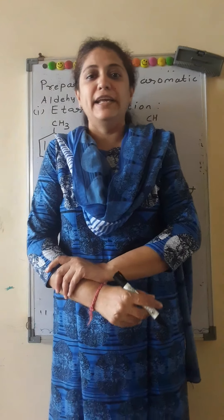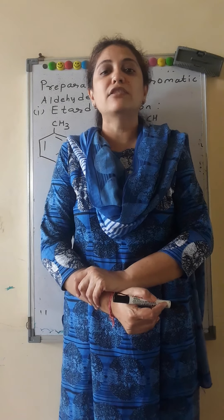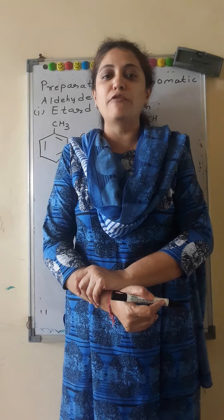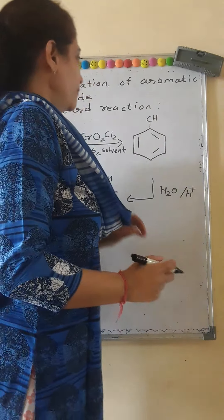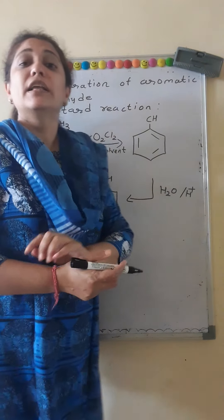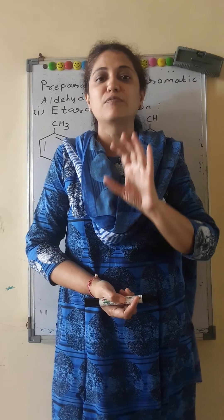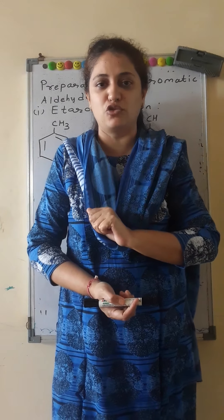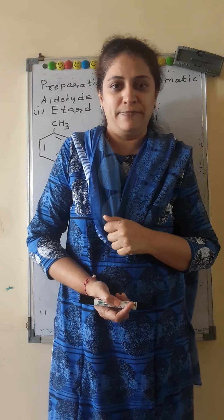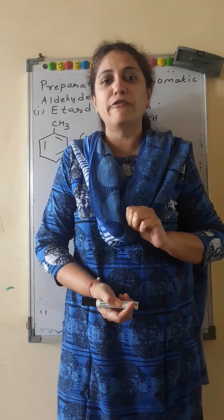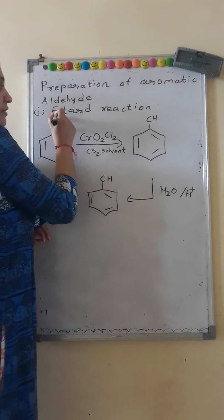Good morning students. In this video, I shall explain the methods of preparation of aromatic aldehyde. Aromatic aldehyde, that is benzaldehyde, in which a benzene ring is bonded to a CHO group, can be prepared from toluene. There are three methods, of which the first method is the Etard reaction.